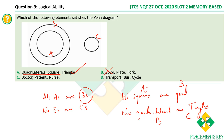For option B (color, plate, fork): while all plates have colors and all forks have colors, we'd need to say no plate is a fork, which is less clear-cut. Options C and D (doctor, patient, nurse and transport, bus, cycle) also don't provide a clearly definitive all-A-are-B and no-B-are-C relationship. Option A with squares, quadrilaterals, and triangles is the clearest match, so option A is the right answer.